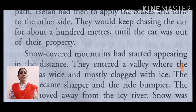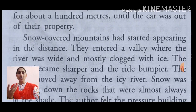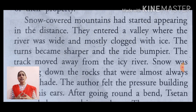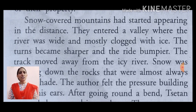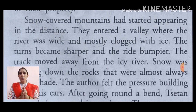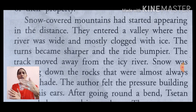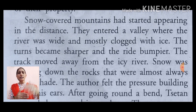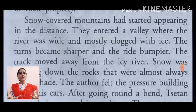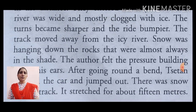Snow-covered mountains had started appearing in the distance — अब बर्फ से ढके वे पहाड़ थे, वो आना शुरू हो गए थे, रास्ते में दिखाई दे रहे थे। They entered a valley where the river was white and mostly clogged with ice — अब वो एक ऐसी घाटी में पहुँच गए थे जहाँ पर जो नदी थी वो चौड़ी थी और लगभग बर्फ से covered थी। The turns became sharp — अब जो turns थे वो एकदम तीखे हो गए थे, खड़े मोड़ आने लगे थे। And the ride became bumpier — और जो ride थी, अब गाड़ी उछल-उछलकर चल रही थी।